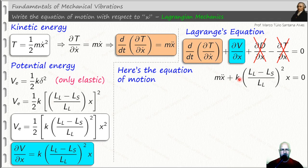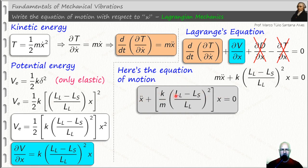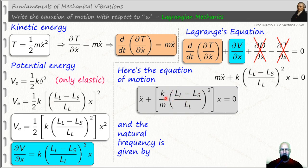We just need to replace both terms in Lagrange's equation. So now we have the equation of motion here. But we've divided all this equation by the equivalent mass, and we get this final equation of motion. That it's possible to determine the natural frequency based on this expression here.